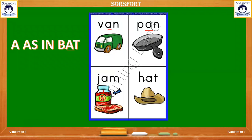Where is A in the hat? Here is the letter A. We can see it in all these three-letter words — van, pan, jam, hat.